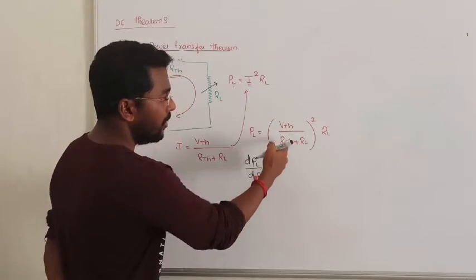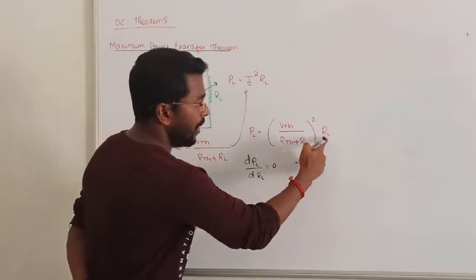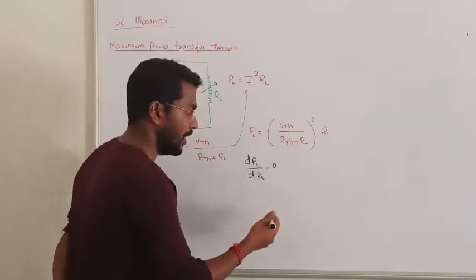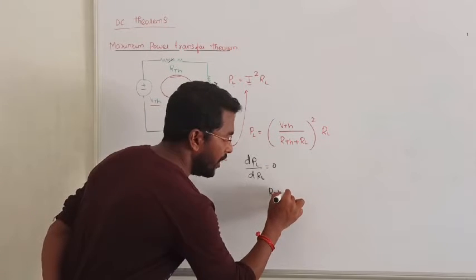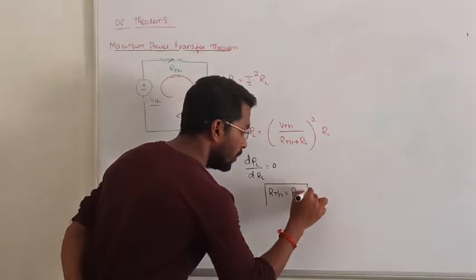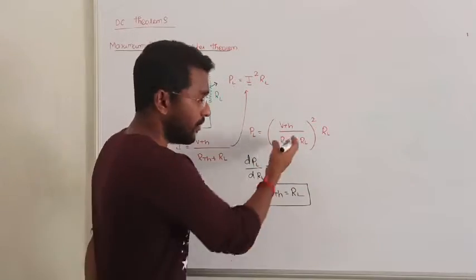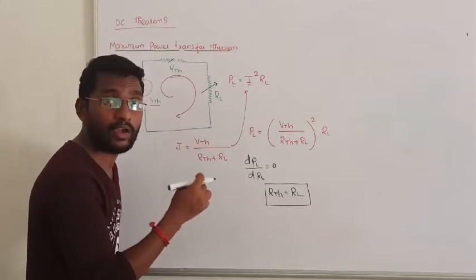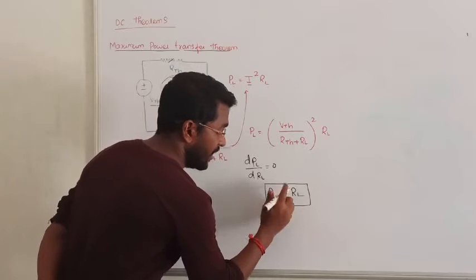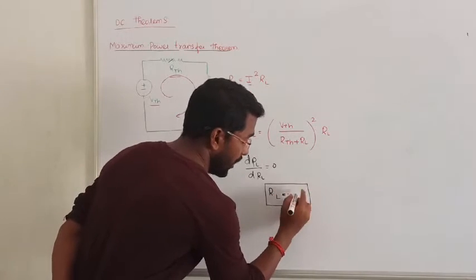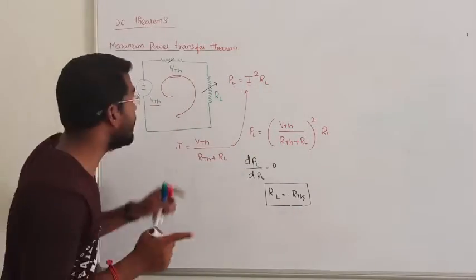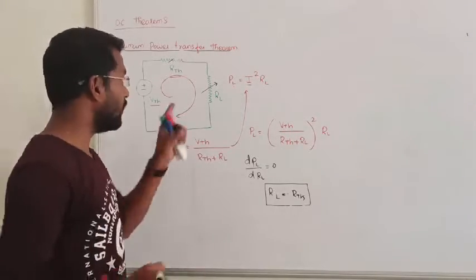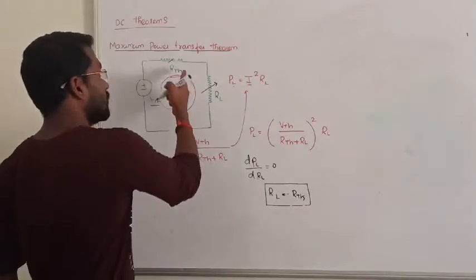If you differentiate the power expression with respect to RL and set it equal to zero, you will get the result that RTH equals load resistance RL. This is the condition for maximum power transfer. Since RTH is fixed, only RL is varied to match it.